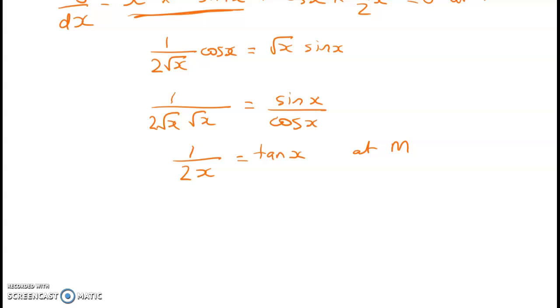And we know that at m the x coordinate is a. This feels like a fudge but it's not. So we're saying at m we've been given the x value is a. So we know that it must be true that one over two a is equal to tan a. This is quite a common question set up with A level questions that suddenly you've got an a in there and not an x. And I think sometimes students find that quite weird to start with.